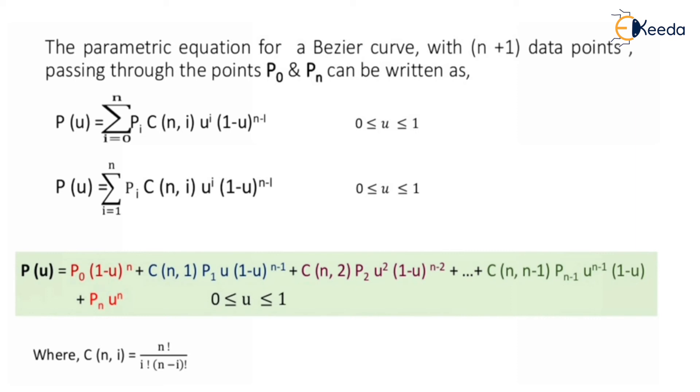Similarly, we can write this equation as P(u) equals summation i equals 1 to n, Pi C(n, i) u raised to i times (1 minus u) raised to n minus i, where 0 ≤ u ≤ 1.